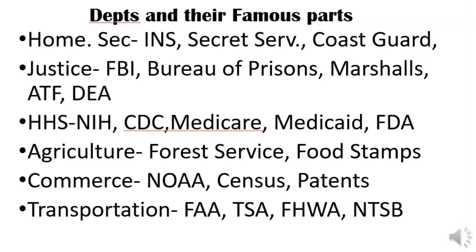With what's going on with the coronavirus, Health and Human Services includes the National Institutes of Health, where Dr. Fauci — head of the infectious disease section of the NIH — you see on the news all the time. You also have the CDC tracking outbreaks and the FDA approving new drugs. Agriculture handles food stamps and the Forest Service. Commerce runs NOAA — national weather — and the census. The Department of Transportation runs the FAA, TSA for airport security, and the NTSB, which investigates major transportation accidents involving planes, trains, automobiles, and bridges.